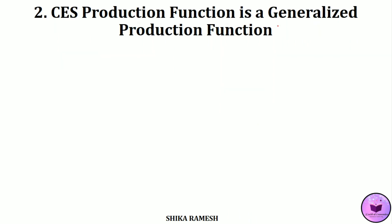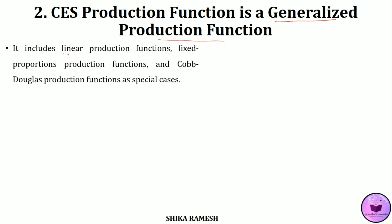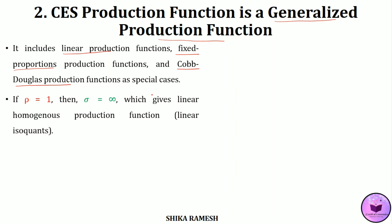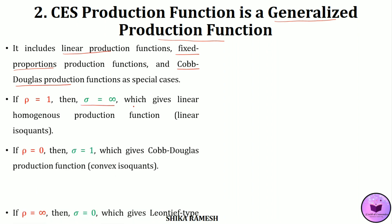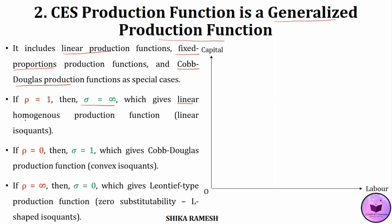The second property of a CES production function is that it is a generalized production function — meaning it is inclusive of the linear production function, fixed proportions production function, and the Cobb-Douglas production function. If rho equals 1, then elasticity of substitution equals infinity, giving us a linear homogeneous production function with a linear isoquant — the case of perfect substitutes where substitution of factors is easy. Taking any point on this linear isoquant, we get elasticity equal to infinity, confirming a constant elasticity of substitution.